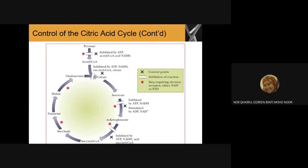When we inhibit this enzyme, the concentration of alpha-ketoglutarate will increase, and this excess substrate can be used to produce specific types of amino acids. This reflects what was mentioned earlier: intermediates of the TCA cycle can act as intermediates for the catabolism and anabolism of other molecules. That is how steps two and three of the TCA cycle are regulated.